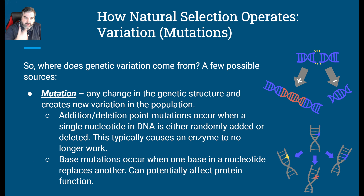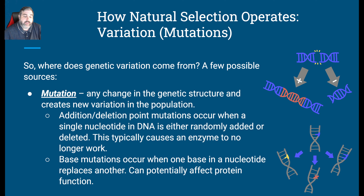Another thing that contributes to variation is mutations. Mutations are any change to the genetic structure of organisms, and they create new variation in the population. There are a few ways that mutations can occur. Some very basic ones to explain here are addition and deletion.